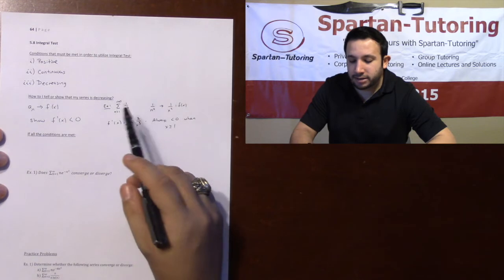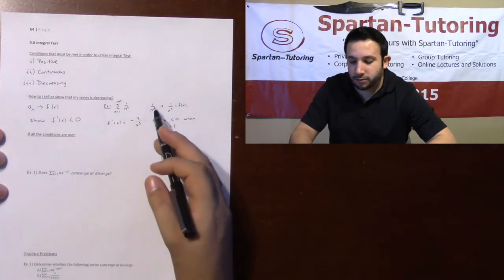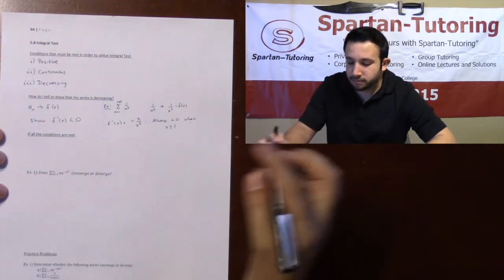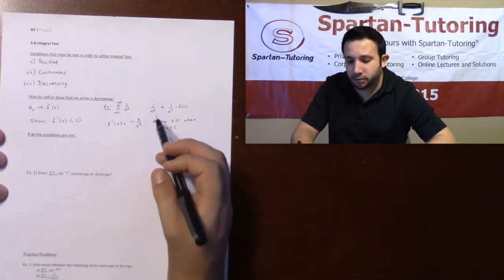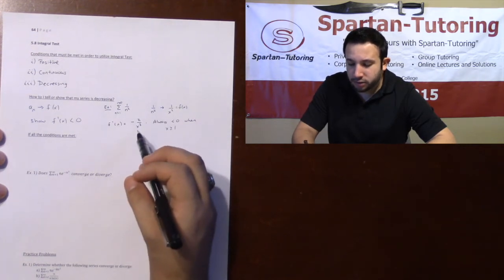For example, let's say I have the sum from 1 to infinity of 1 over n². First off, I'm changing 1 over n² to 1 over x²—that's just me, you can leave it in n's if you want to—but I took the derivative, and if you look at the derivative, negative 2 over x³...